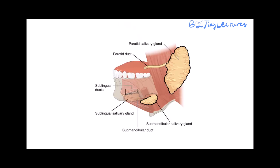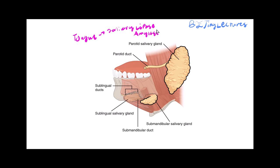Digestion first begins in the mouth. You may think we don't really digest food in the mouth, but we do because the tongue releases two enzymes — salivary lipase and salivary amylase. These are enzymes; '-ase' means enzyme. Lipase means this enzyme breaks down lipids or fats, and amylase means we're breaking down carbohydrates.